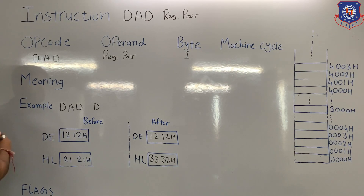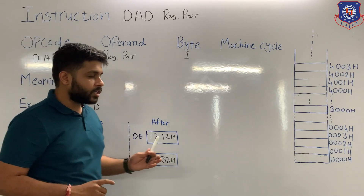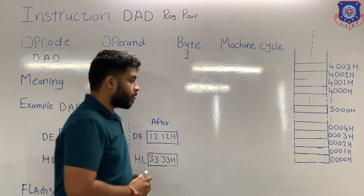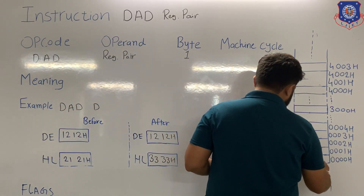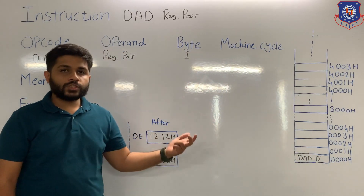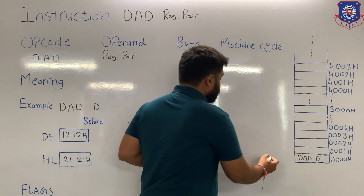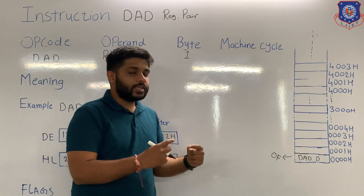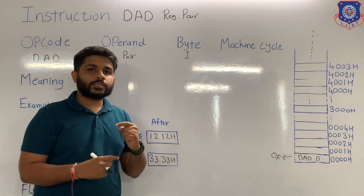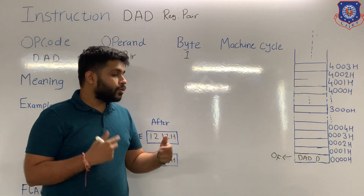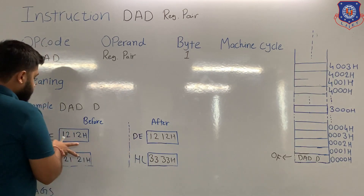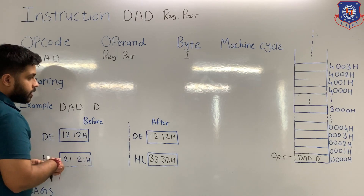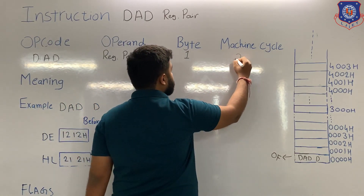Now let's see the machine cycle. This instruction is a 1-byte instruction, so when it is stored in memory it will occupy only one memory location. The processor will fetch it using the opcode fetch machine cycle. When the microprocessor performs the opcode fetch, the instruction is transferred to the microprocessor, then the processor will decode and execute it. During execution, the processor performs addition of the two 16-bit numbers and the answer is stored in internal registers. It means only one machine cycle is required, that is the opcode fetch.